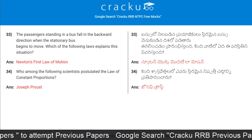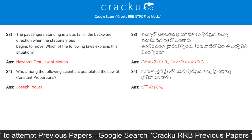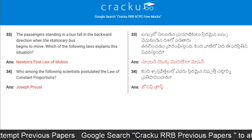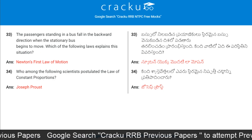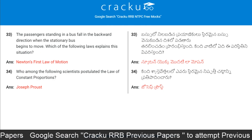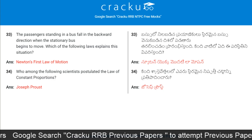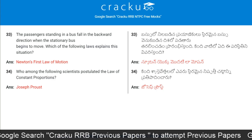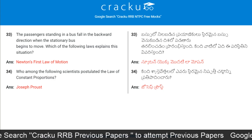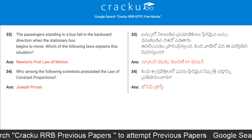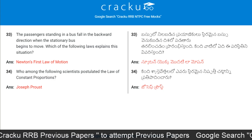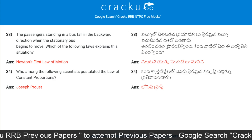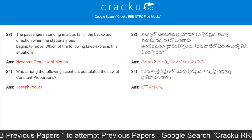The passengers standing in a bus fall in the backward direction when the stationary bus begins to move. Which law explains this situation? The answer is Newton's first law of motion.